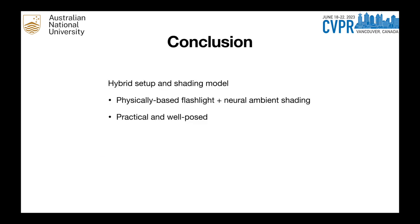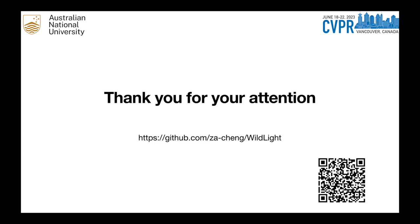To conclude, we present a hybrid method that combines both the darkroom and in-the-wild setups for inverse rendering. Our method involves two shaders: a physically-based flashlight shader for recovering materials, and a neural ambient shader that sidesteps the problems of explicit ambient shading. Our setup is simple and practical, and the inverse problem is well posed. We are able to get consistently better results than existing in-the-wild methods. Thank you for listening. You can find our dataset and code on our official GitHub repository.